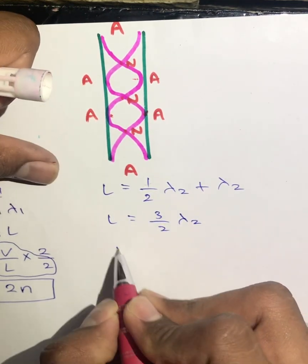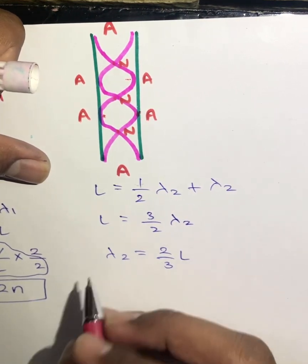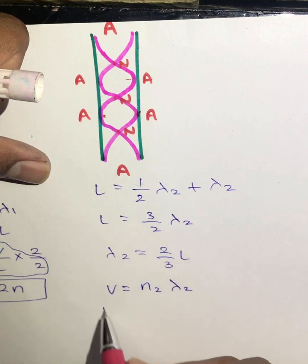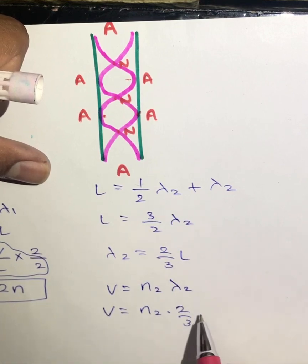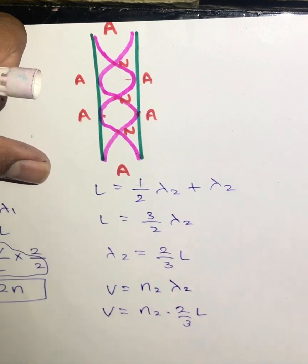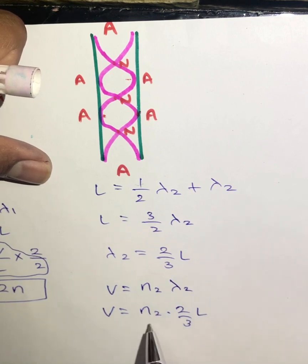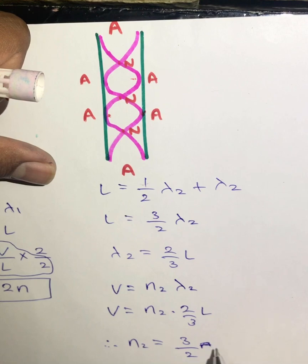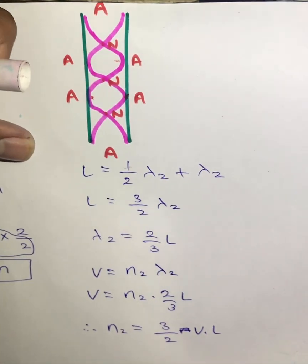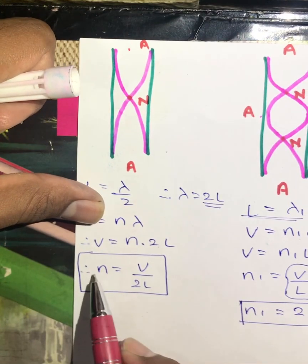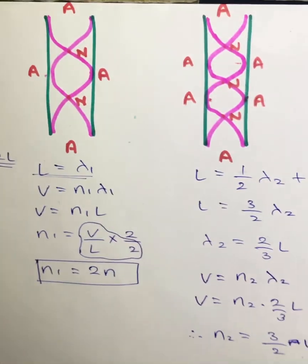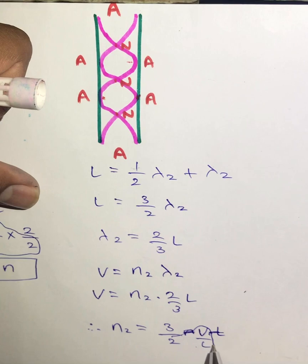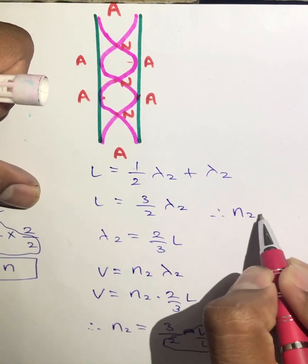From this relation we get λ₂ = (2/3)L. Using the velocity formula v = n₂ × λ₂ and substituting λ₂ = (2/3)L, we get v = n₂ × (2/3)L. Taking all terms except n₂ to the left-hand side gives n₂ = 3v/(2L). Since v/(2L) = n from the first mode, we can substitute to get n₂ = 3n. So the frequency of the third mode is three times the original frequency.